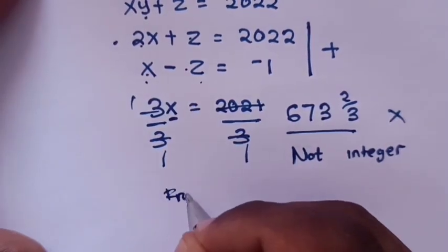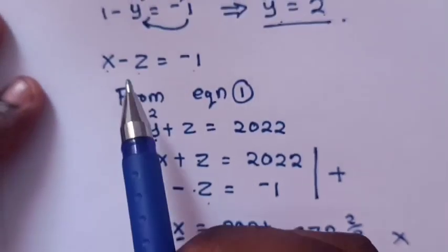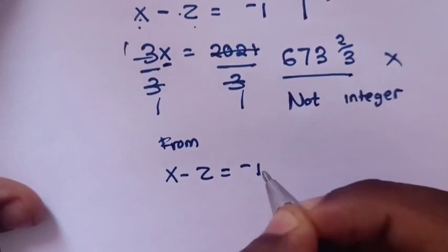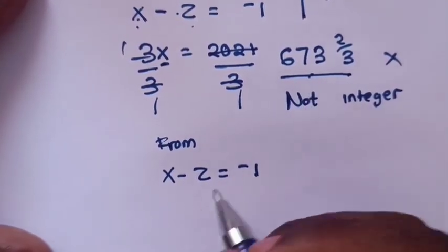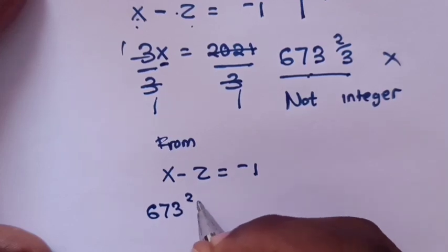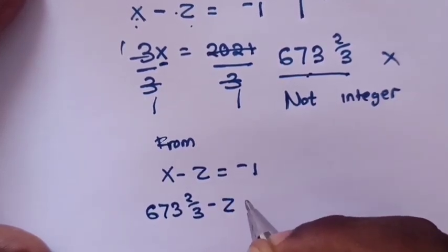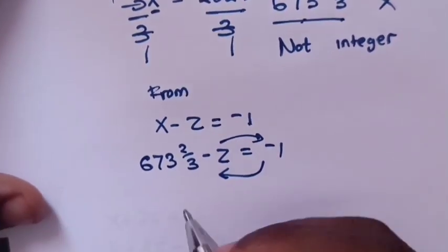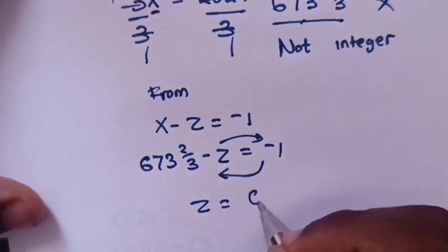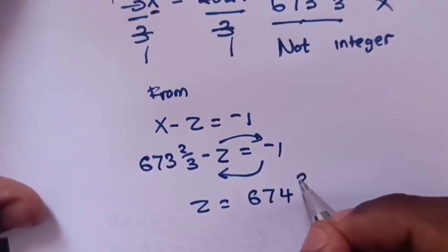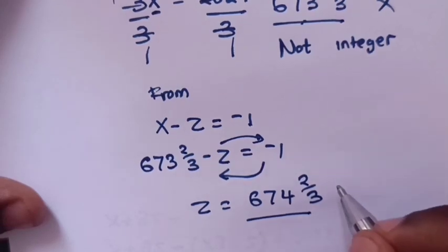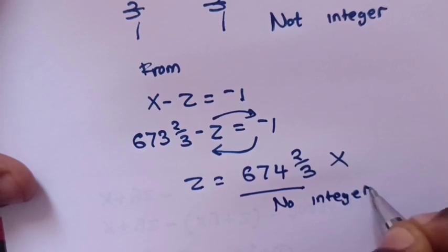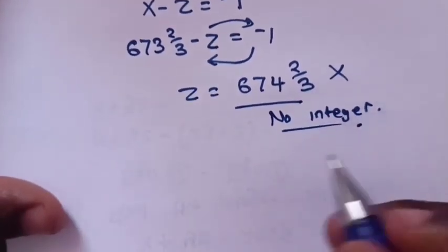To find z, substituting x = 2021/3 into x - z = -1 gives 2021/3 - z = -1, so z = 2021/3 + 1 = 2024/3, which is also a fraction and not an integer. Therefore Case 2 yields no integer solutions.